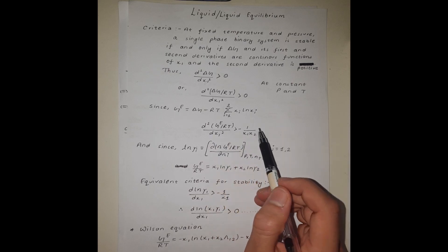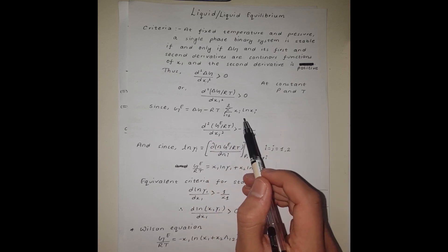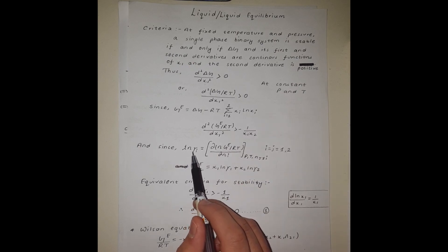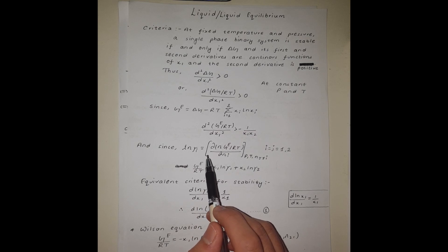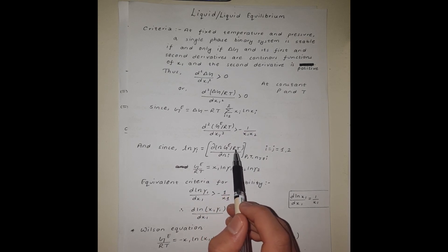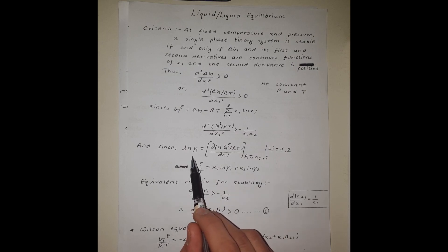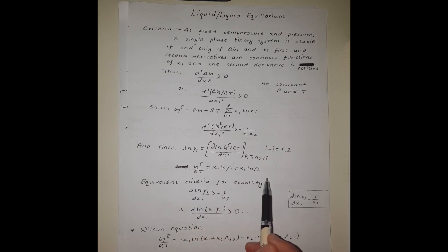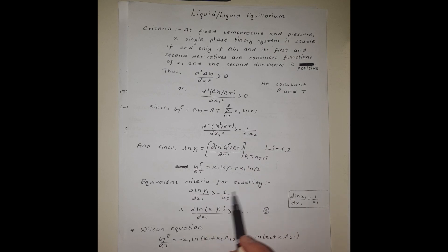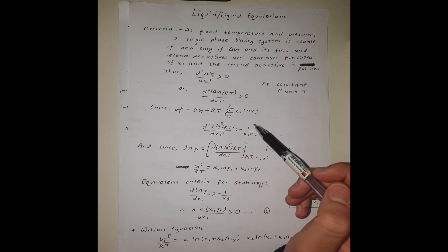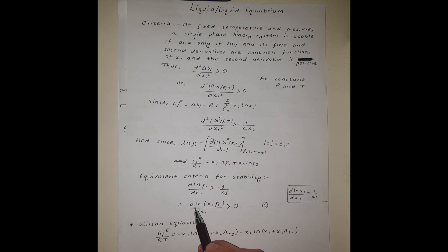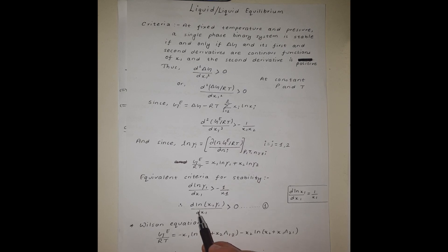Since the logarithm of the activity coefficient of species i is the partial molar property of excess Gibbs free energy, we can write a summability relation for the activity coefficient. Using this summability relation, we can obtain yet another equivalent stability criterion, which is the same as the previous two criteria.